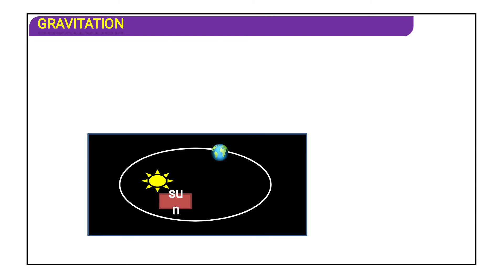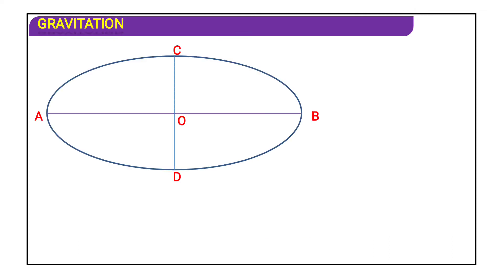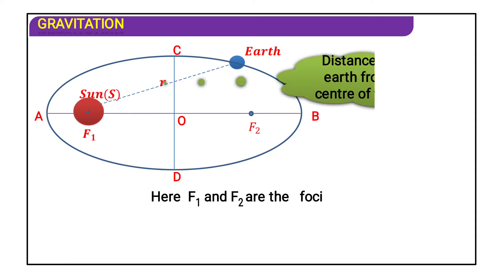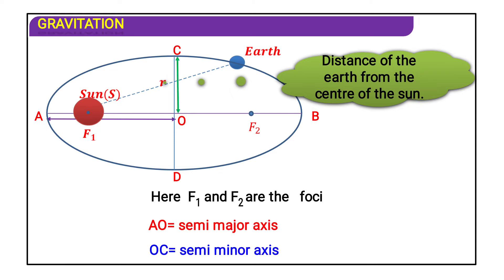In Kepler's first law, or the law of orbits, each planet moves around the sun in an elliptical orbit with the sun at one focus. The sun is placed at focus F1, and the earth is in an elliptical orbit. The distance between the sun and earth is r. F1 and F2 are the foci of the ellipse. The semi-major axis is denoted as 'a' and the semi-minor axis as 'c' from the center.